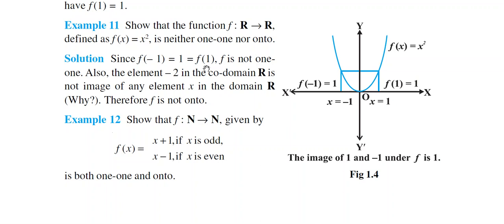We need to prove that this function is neither one-one nor onto. From the graph, you can prove this very easily. When x = −1, the y-coordinate is 1, because (−1)² = 1, so f(−1) = 1. When x = 1, f(1) = 1 as well. So for two different values of x, namely −1 and 1, the value of y is the same.